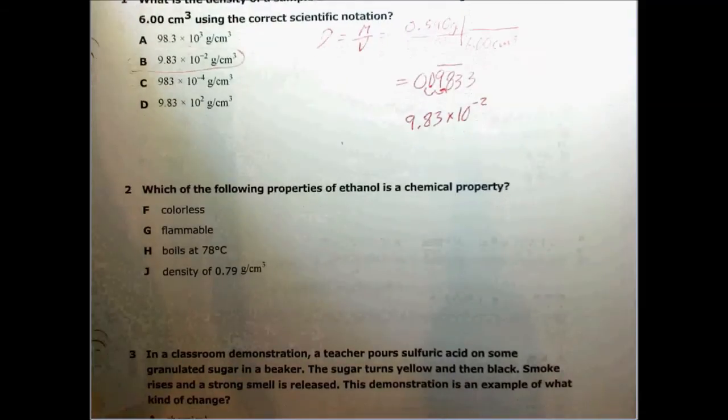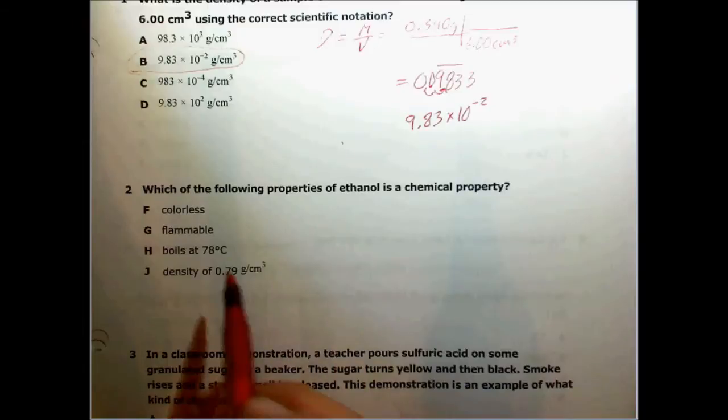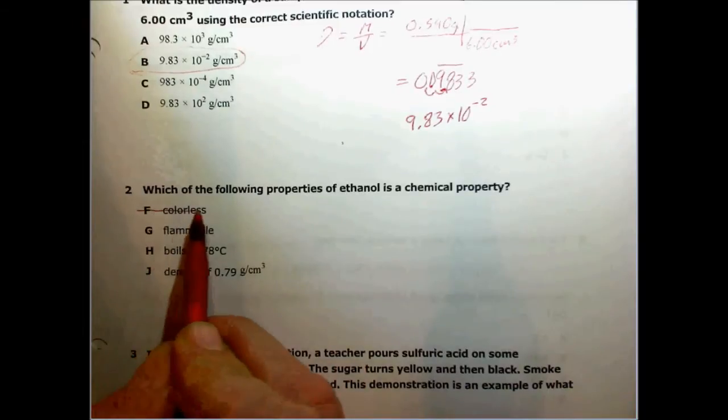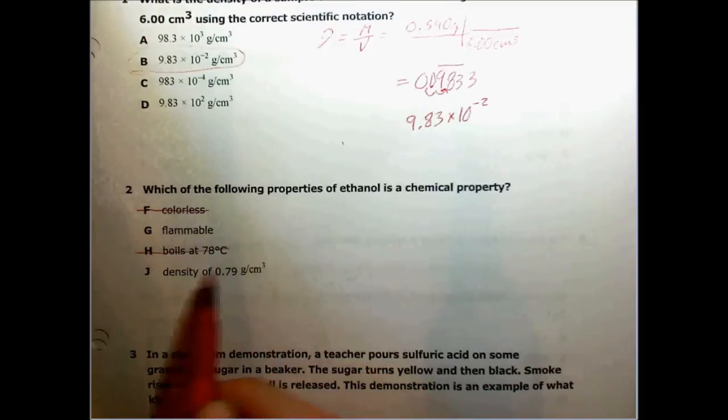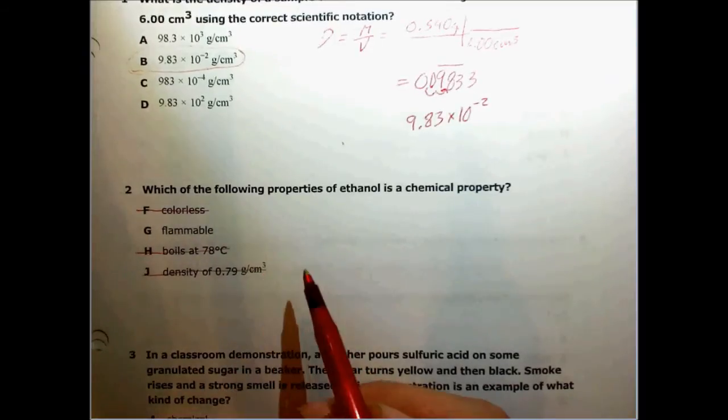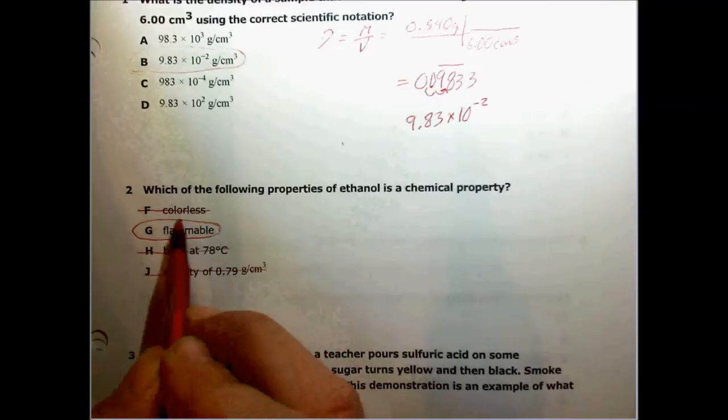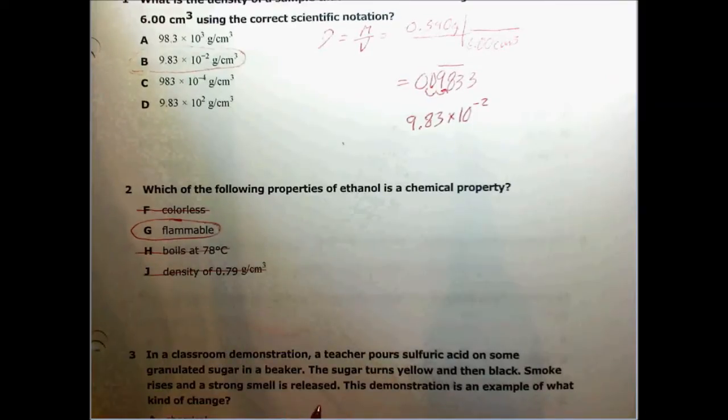The second question says which of the following properties of ethanol is a chemical property? Color is a physical property. Boiling point is a physical property. And density is a physical property. The only one left which can be a chemical property is the flammability, because when something burns, that's a chemical reaction.